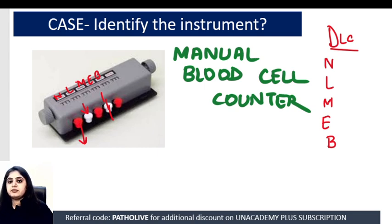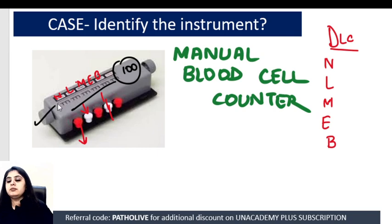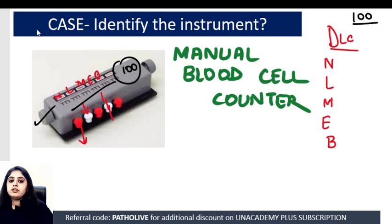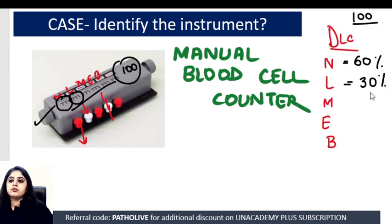This counter has a system where as soon as the total number of clicks reaches 100 — as soon as 100 cells in total are counted — an alarm goes off inside it, and I know I've counted a total of 100 cells. Out of those 100 cells, I then read: okay, I clicked the neutrophil button 60 times, so 60% neutrophils; I clicked the lymphocyte button 30 times, so 30% lymphocytes — and similarly I get the entire differential count.